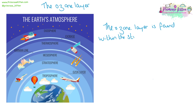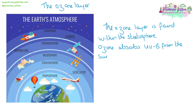The ozone layer can be found within the stratosphere. Our atmosphere is very deep and is divided into layers, and the ozone layer is just one of those layers. The function of ozone is to absorb UVB from the sun, so ozone protects us and protects life on Earth from the effects of UVB.